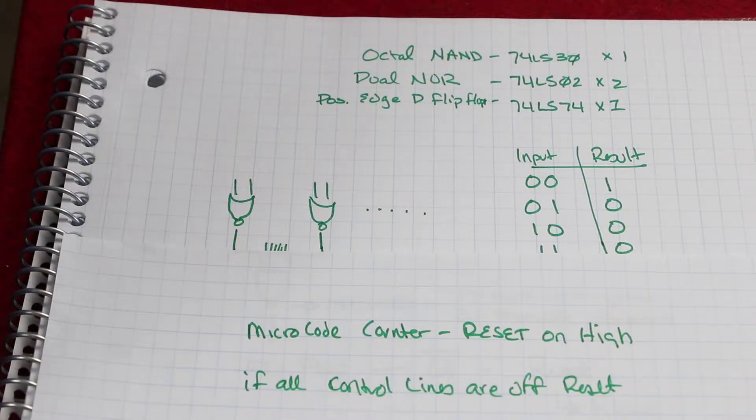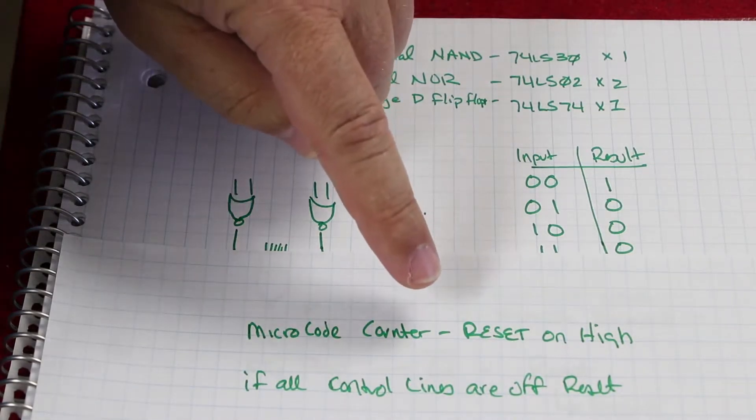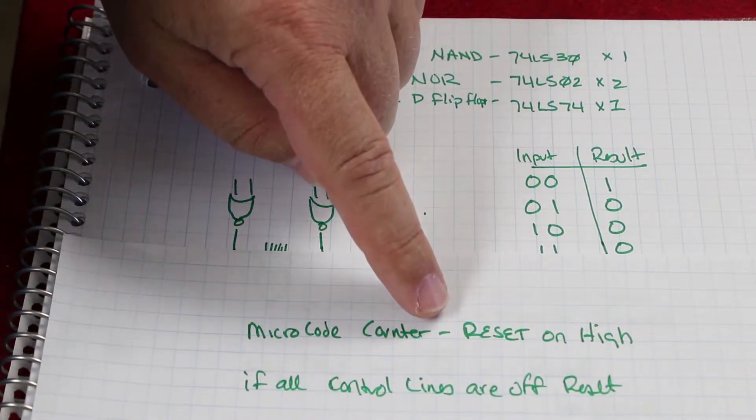We can reset it immediately once we detect a situation where no microcodes are being executed. In my case, I have 15 control lines and I need to logically map those such that they provide a signal. If we have the microcode counter set, we can reset it on a high value.